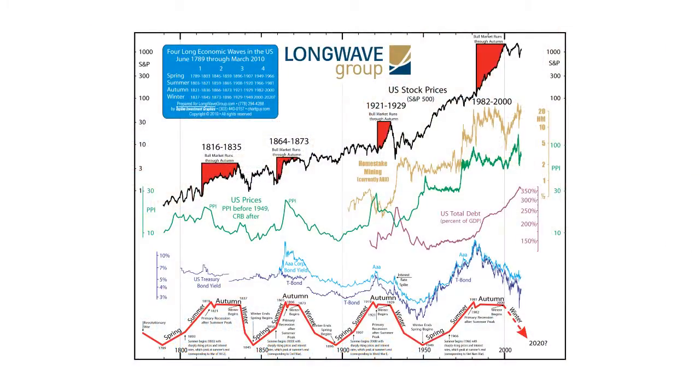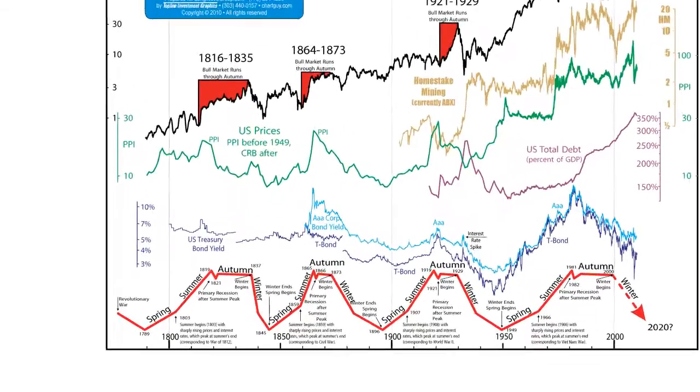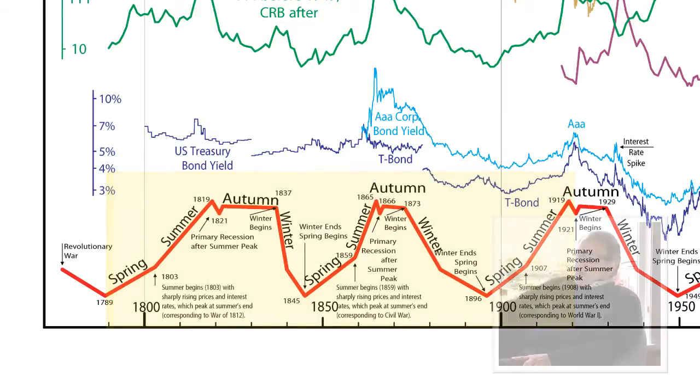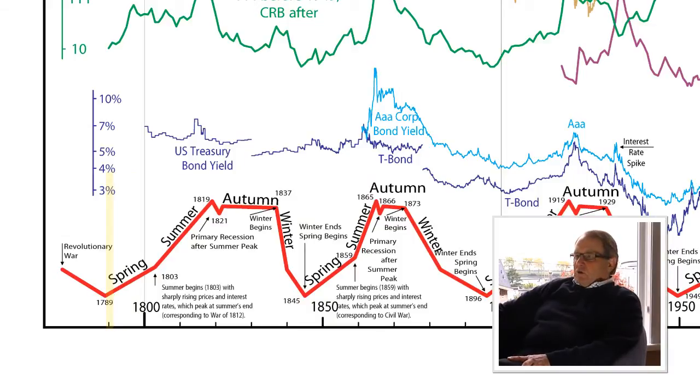This Longwave is based on Nikolai Kondratiev, the Russian economist's long wave cycle which he formulated in the mid-1920s. Kondratiev only saw two and a half cycles when he wrote his thesis. He went back to 1789, which was the dawn of the Industrial Revolution. His cycle was based on things like trade, interest rates, the production of things like pig iron, and so on.